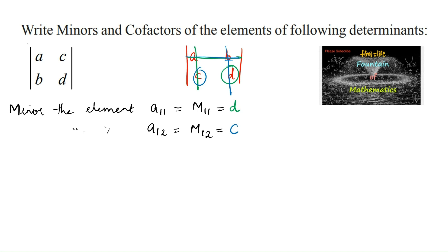And next, A21, second row, first column element, M21 is equal to — here, C is the element; deleting its row and its column, we are left with only one element, that is B. So, M21 equals B.